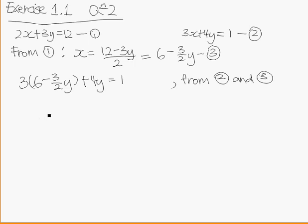Expanding: 18 - (9/2)y + 4y = 1. This is from multiplying the 3 into each term. Combining like terms and simplifying,